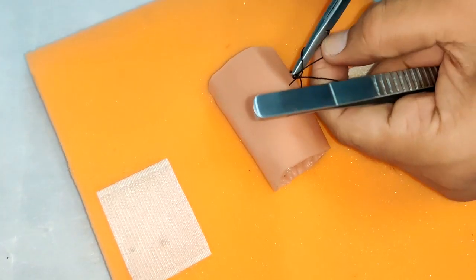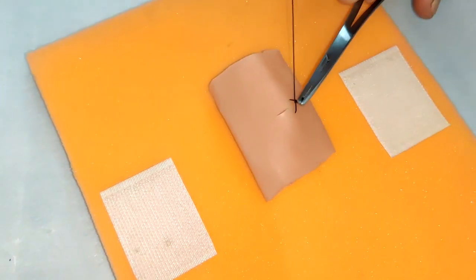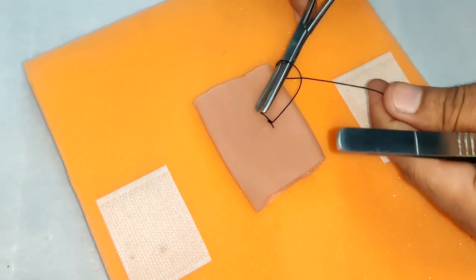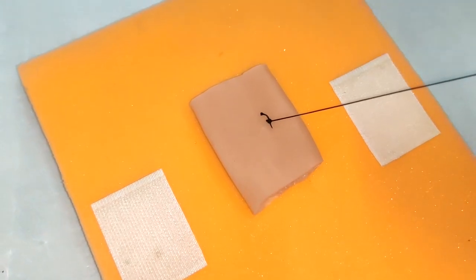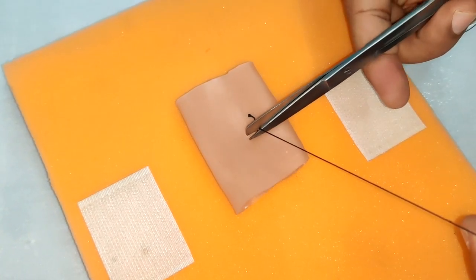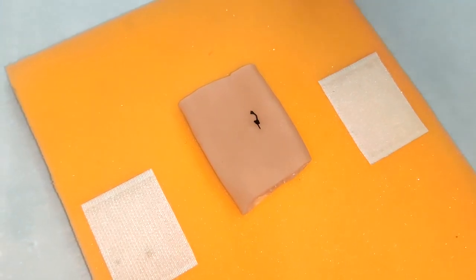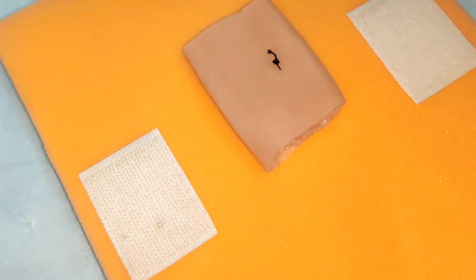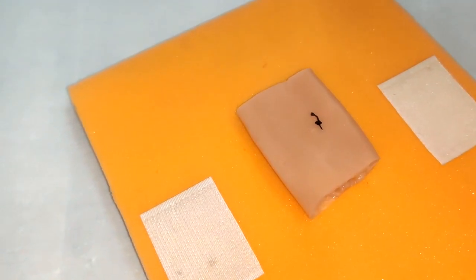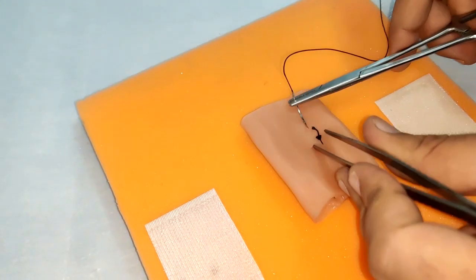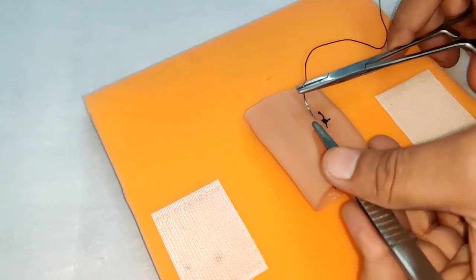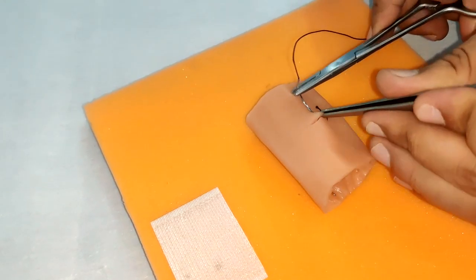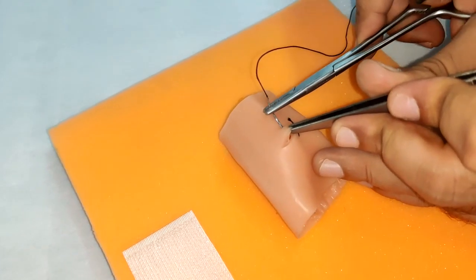We have taken simple interrupted sutures, but you could have also taken continuous interlocking sutures. Again, the maneuver is from outside, we go inside the lumen and come out again.